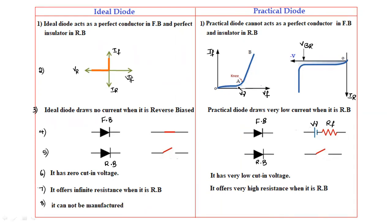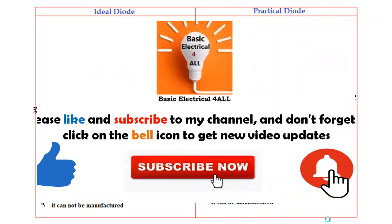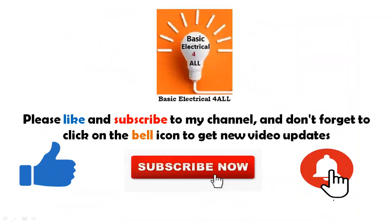The ideal diode cannot be manufactured, but in case of the practical diode we can manufacture it. These are the differences between the ideal diode and the practical diode of the p-n junction diode. This concludes the discussion about the p-n junction diode — ideal and practical.